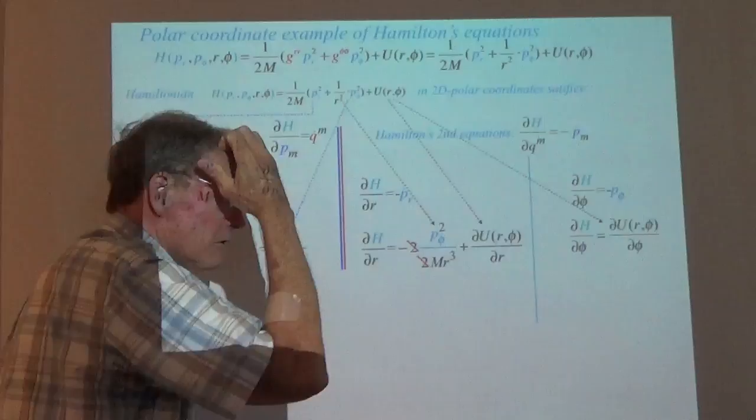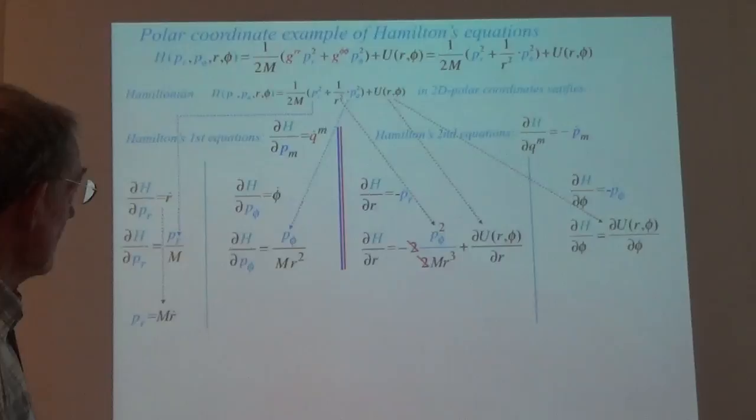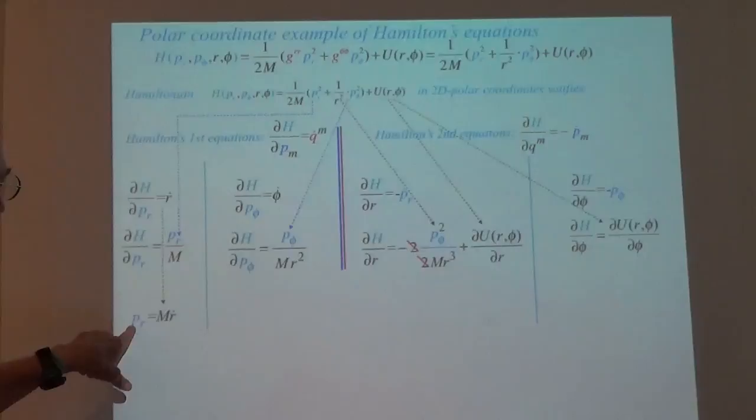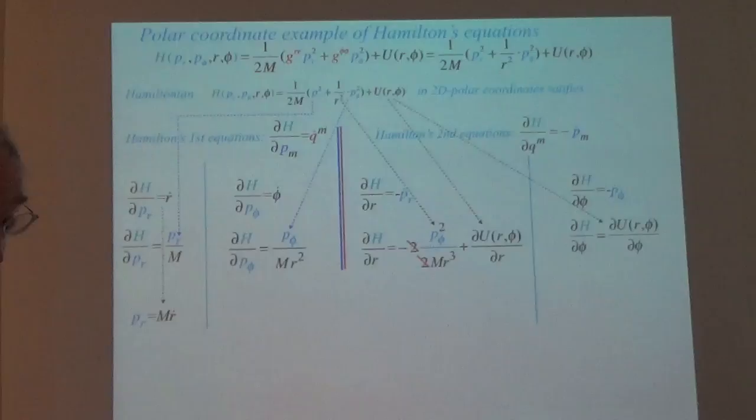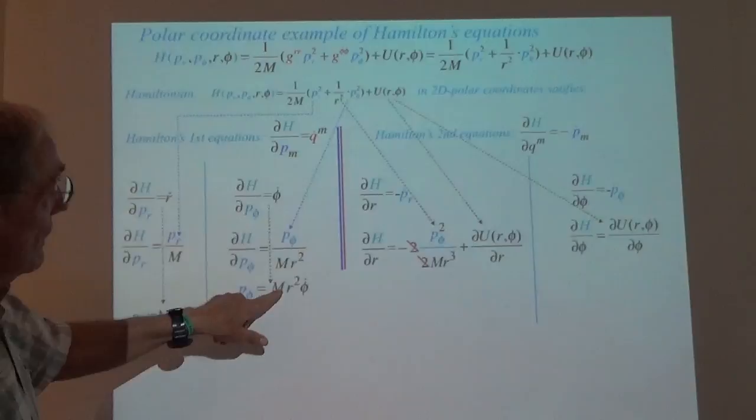So far, so good. We come and make sure these two jive, and that just tells us P_R equals M R-dot. That's something we got pretty quickly with Lagrangian, which only shows up now in the Hamiltonian expression. And then that the angular momentum is equal to M R-squared phi-dot. It takes two steps to get that — that came out one step with Lagrangian.